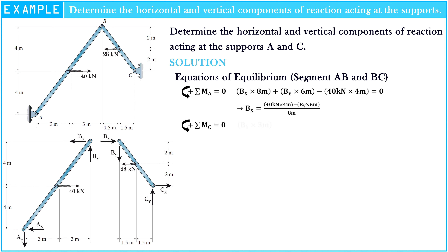So, By multiplied by 6 meters, minus By multiplied by 4 meters, plus 28 kN multiplied by 2 meters is equal to zero. Hence, By is equal to 4 kN.